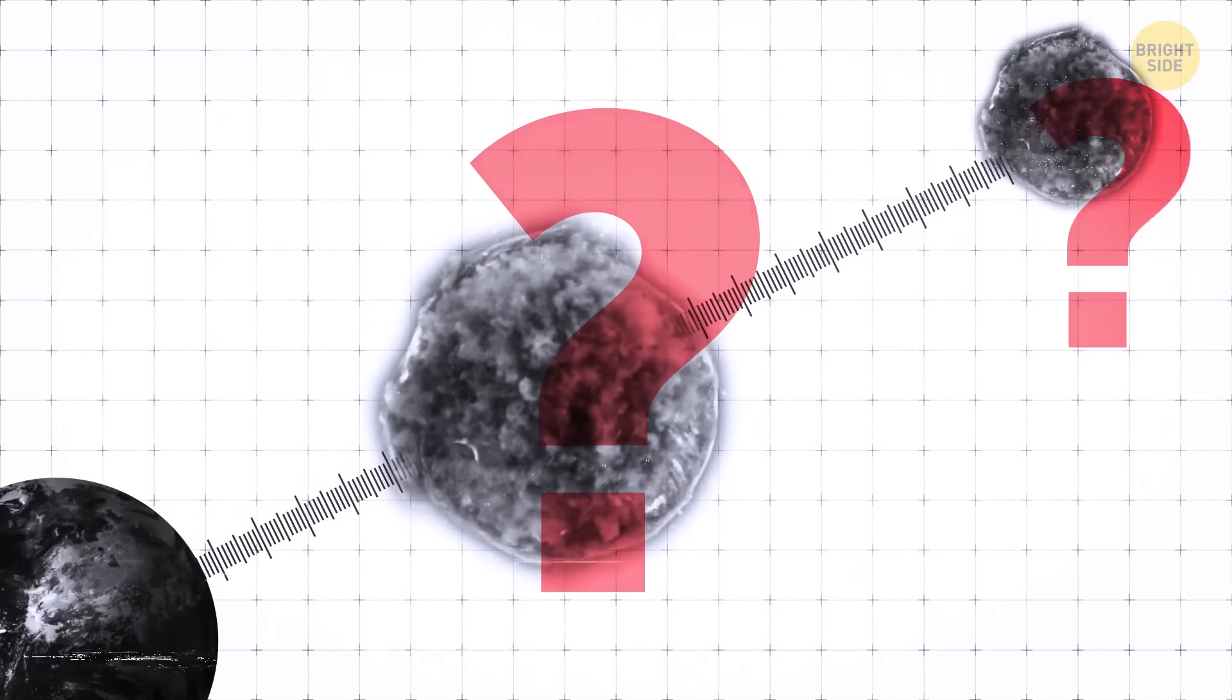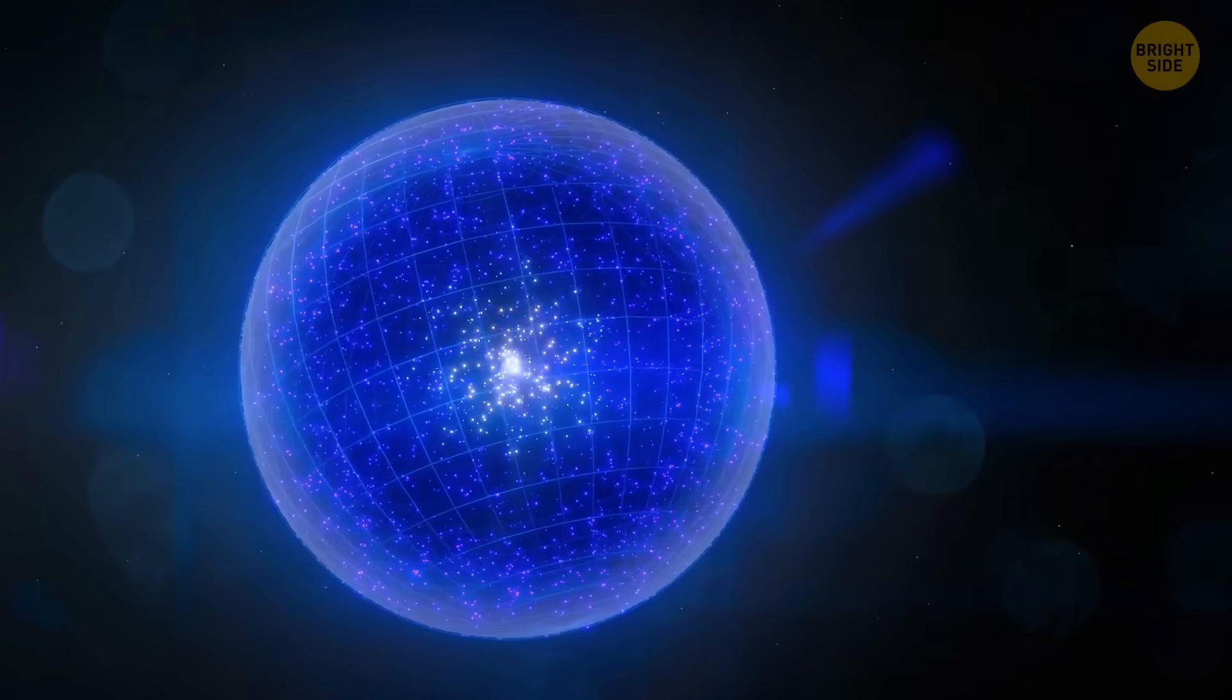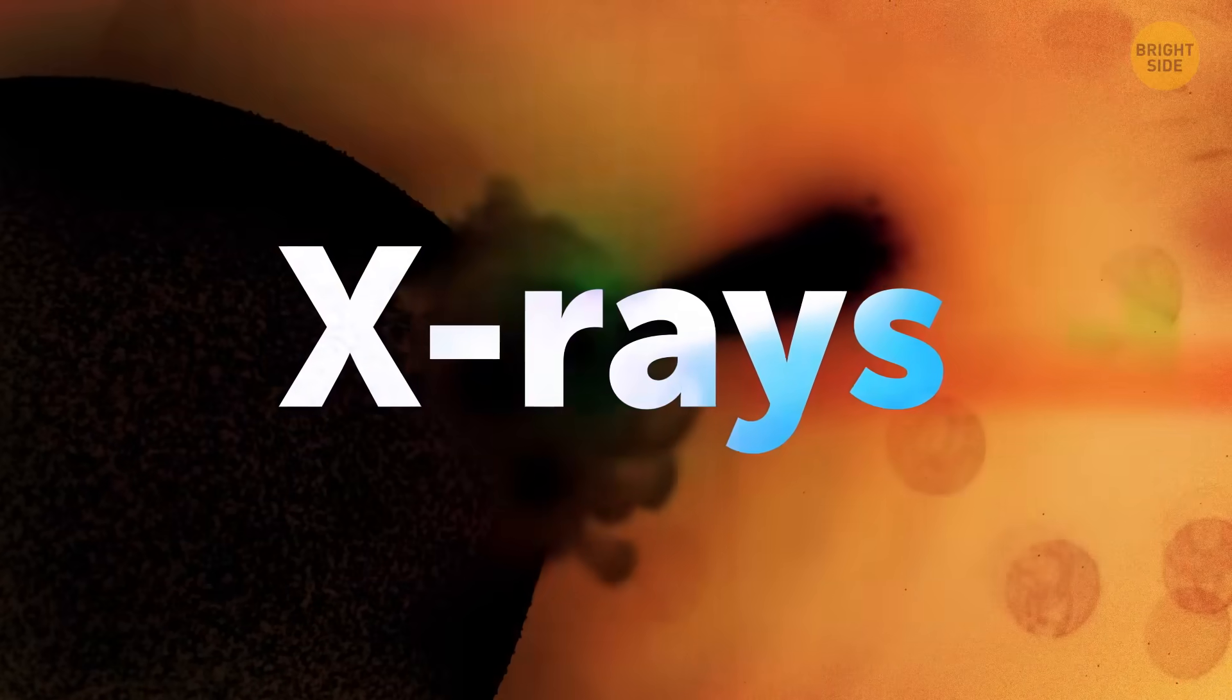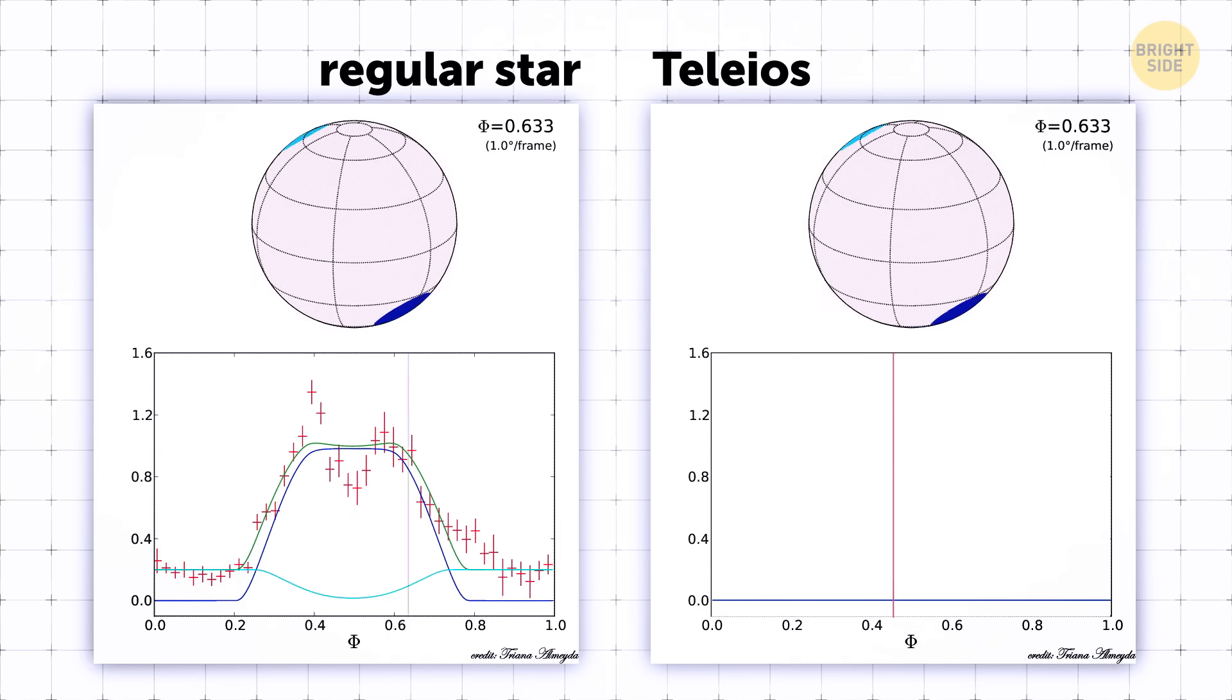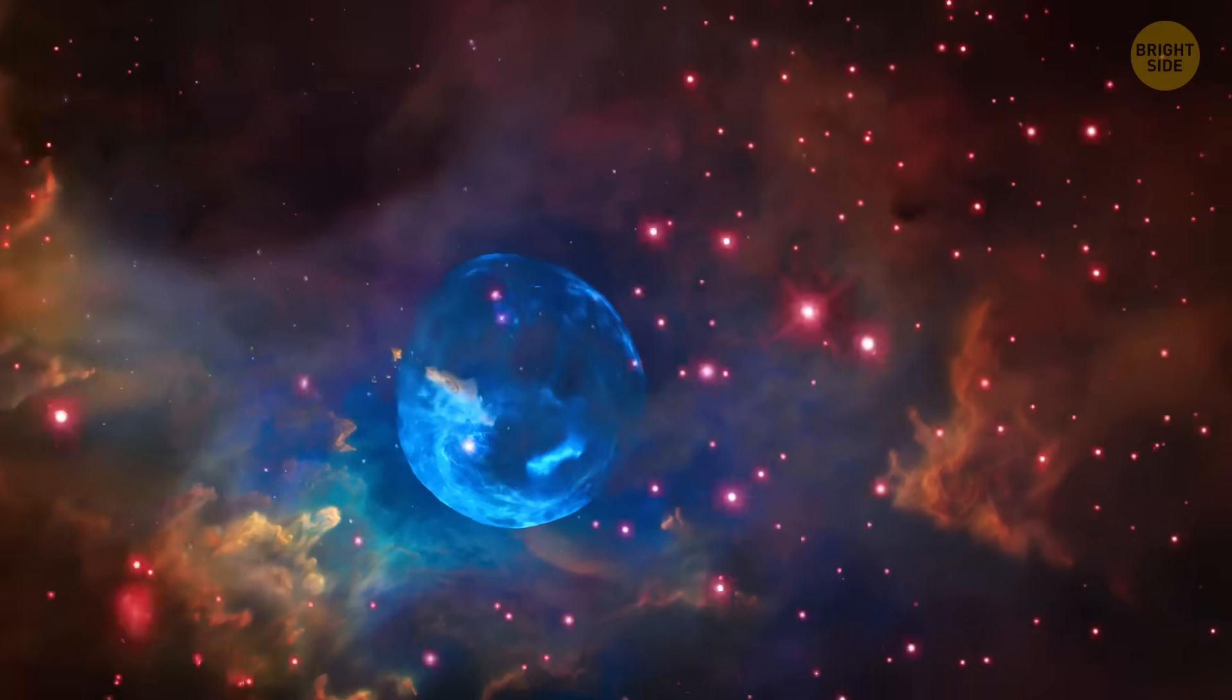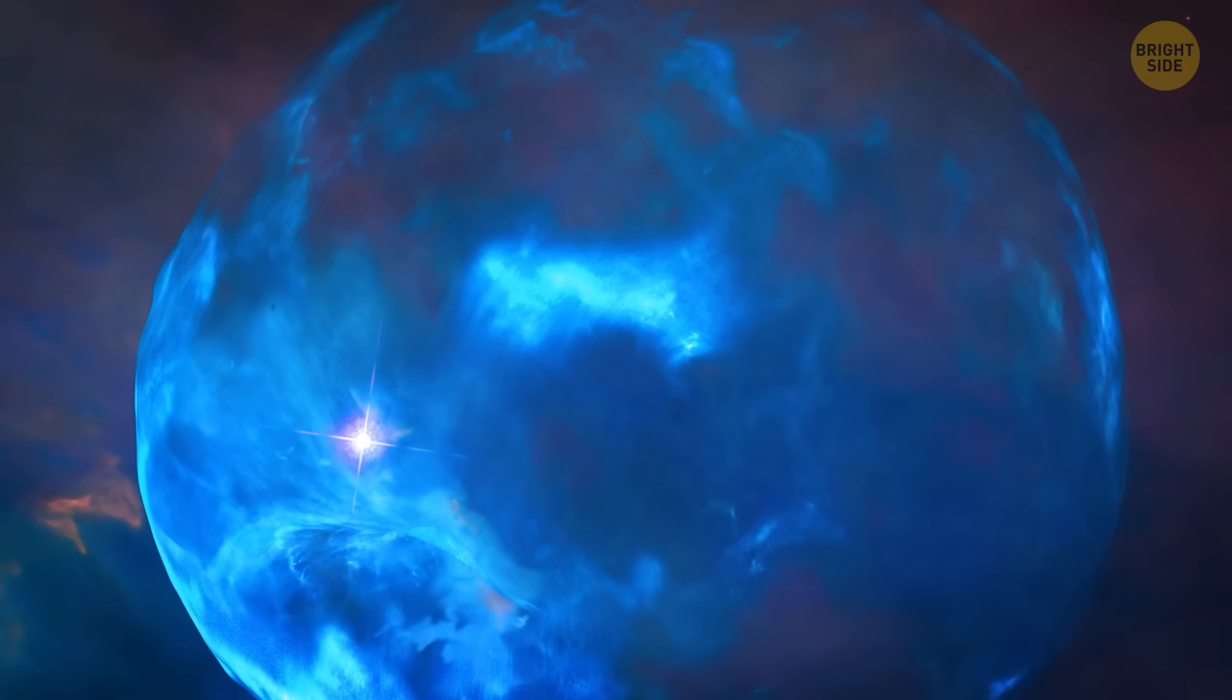That's where things get tricky. Scientists have models that tell us how these supernova leftovers should behave. And one of the most important things they expect to see is X-rays. But you might remember that Teleos doesn't show any. Not a single X-ray in sight. That's the big mystery. How can something that should be glowing with X-rays be totally silent? It just doesn't add up and leaves the scientists very puzzled.